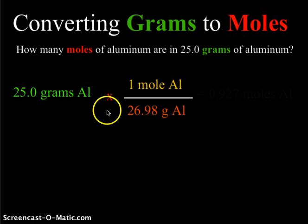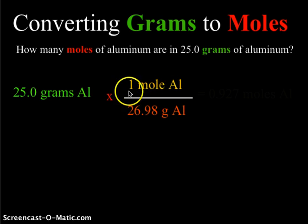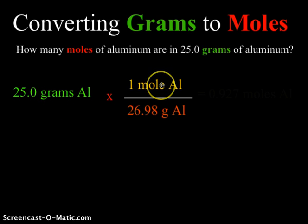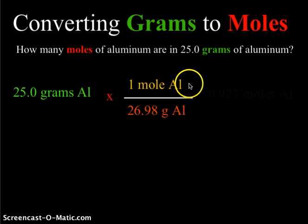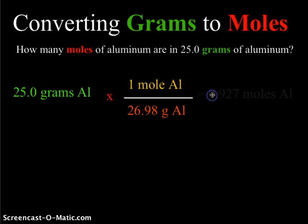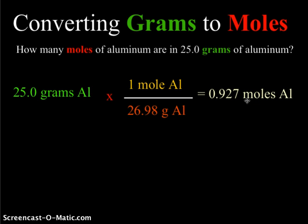Doing the math, the grams will cancel and we will end up with an answer in moles. We take 25.0 grams, multiply by 1 mole, and divide by 26.98 grams — remembering that any number on top of the fraction we are multiplying, any number on the bottom we are dividing. This gives us an answer of 0.927 moles of aluminum, because there are three significant digits in the question, 25.0, so we need three significant digits in our answer.